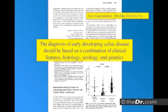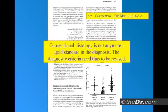The diagnosis of early developing celiac disease should be based on a combination of clinical features, histology, serology, and genetics. Conventional histology is not anymore a gold standard in the diagnosis — the diagnostic criteria need to be revised. The American Journal of Gastroenterology states that doing biopsies is not the gold standard anymore, because that's an end stage.